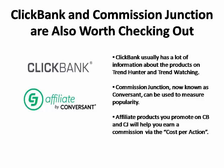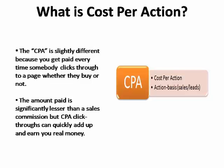ClickBank has a lot of information about the products it offers. A similar site that also has a lot of data you can use to measure popularity is Commission Junction. With the affiliate products you promote on ClickBank and Commission Junction, you make a commission every time somebody clicks through and buys that product. But another affiliate model is called Cost Per Action, where you can get paid every time somebody clicks through to see a page whether they buy anything or not.